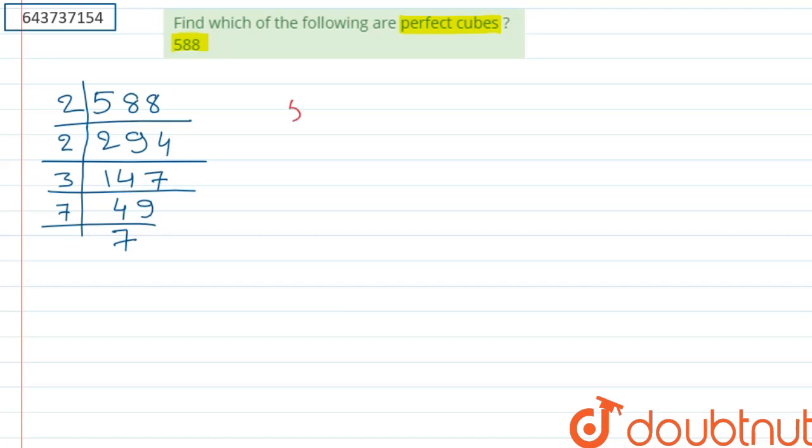So, the value of 588 equals 2 into 2 into 3 into 7 into 7, and that will be equals to 2 to the power 2 into 3 to the power 1 into 7 to the power 2.